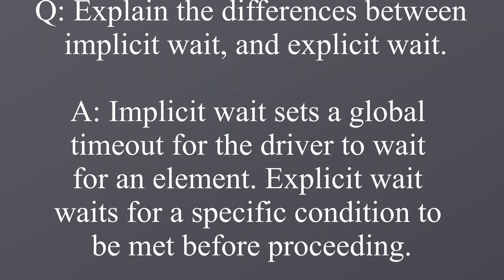Explain the differences between implicit wait and explicit wait. Implicit wait sets a global timeout for the driver to wait for an element. Explicit wait waits for a specific condition to be met before proceeding.